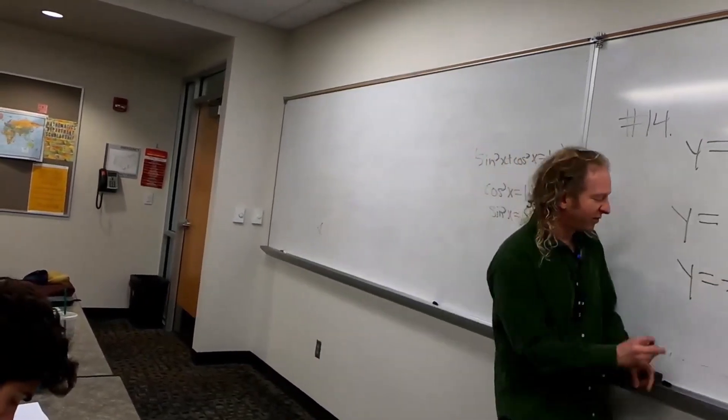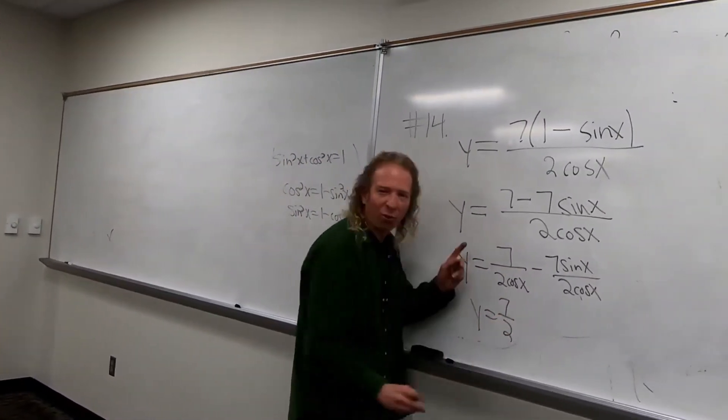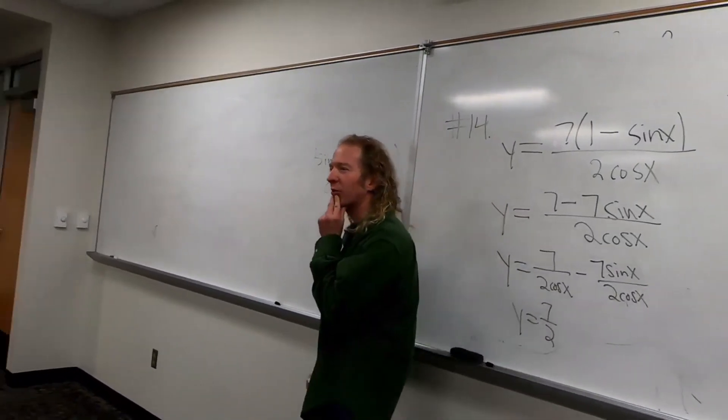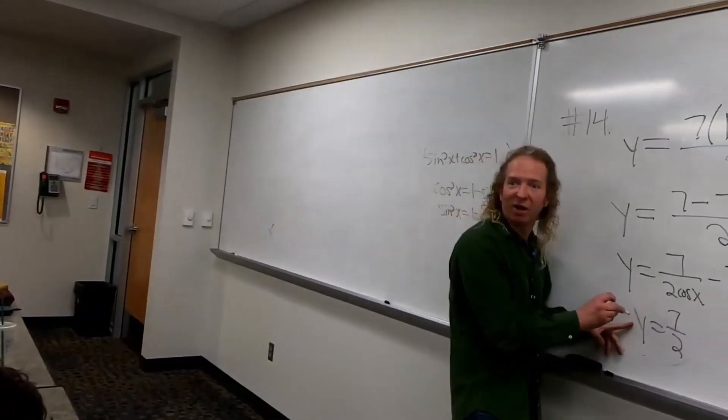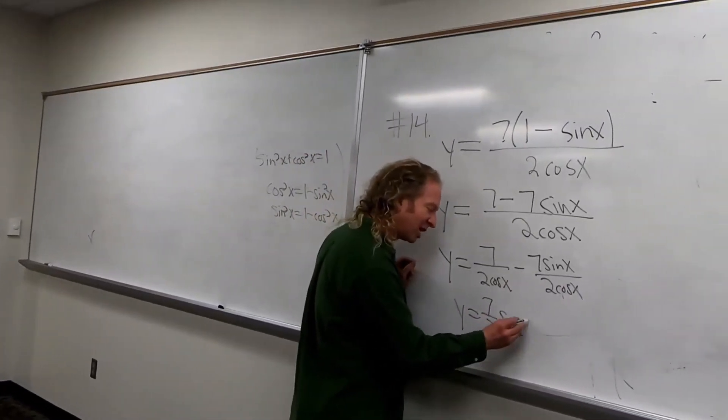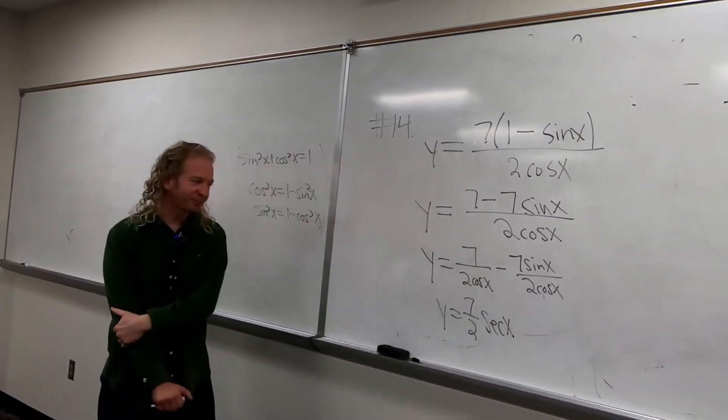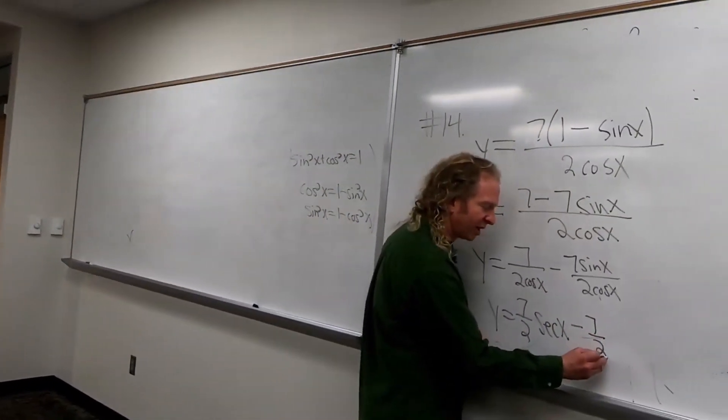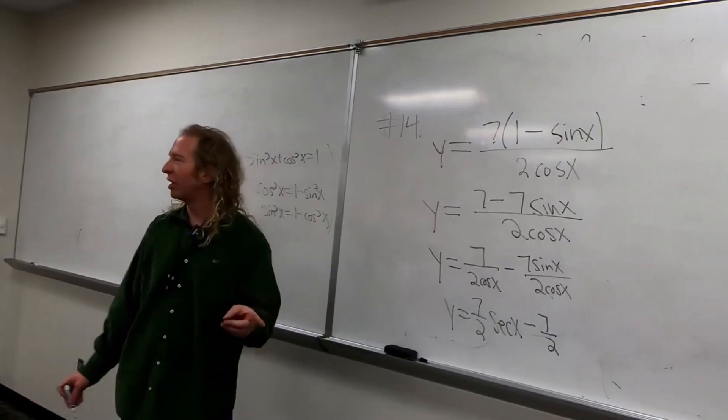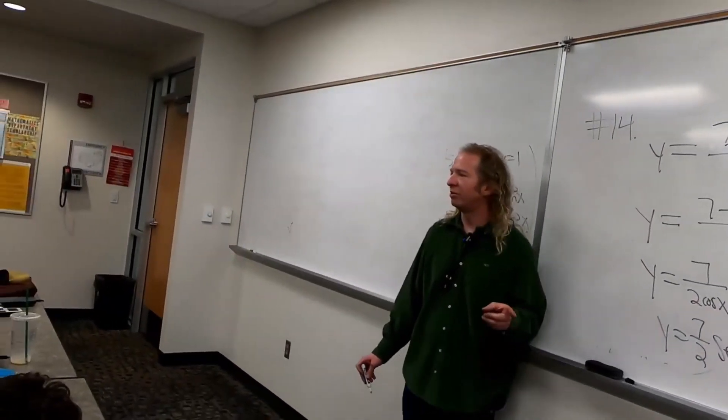This is 7 halves. And then what's 1 over cosine? What function is that? Secant. So this is secant. It's still y, by the way. We haven't differentiated yet. So it's still y. And then minus 7 halves. And then sine over cosine is tangent. Tangent.